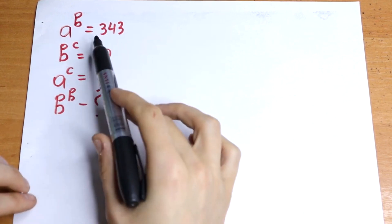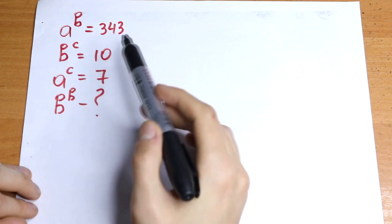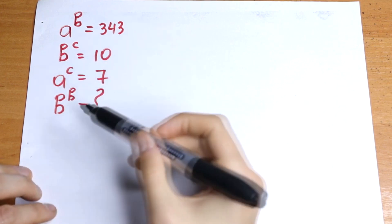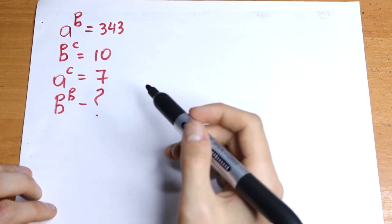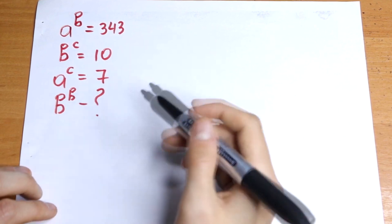a to the power b equals 343, b to the power c equals 10, a to the power c equals 7, and we need to find b to the power b. How can we do this? You can solve it by yourself.